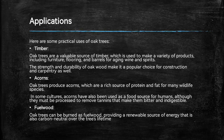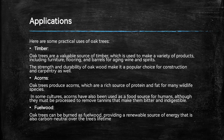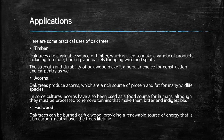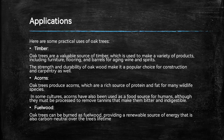Here are some practical uses of oak trees. Timber: Oak trees are a valuable source of timber, which is used to make a variety of products including furniture, flooring, and barrels for aging wine and spirits. The strength and durability of oak wood make it a popular choice for construction and carpentry as well. Acorns: Oak trees produce acorns, which are a rich source of protein and fat for many wildlife species including animals, insects and mammals. In some cultures, acorns have also been used as a food source for humans, although they must be processed to remove tannins that make them bitter and indigestible. Fuel wood: Oak trees can be burned as fuel wood, providing a renewable source of energy that is also carbon neutral over the tree's lifetime.